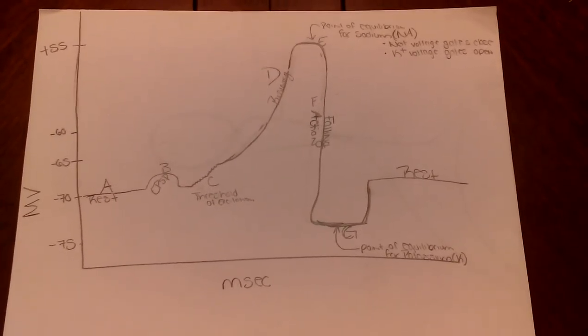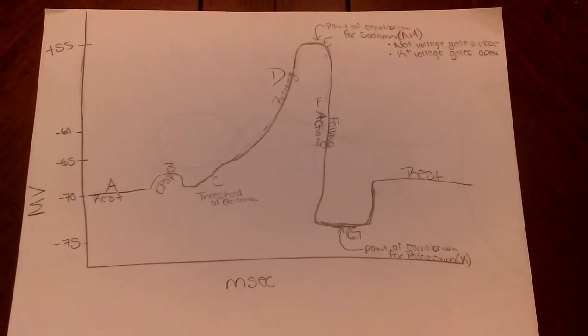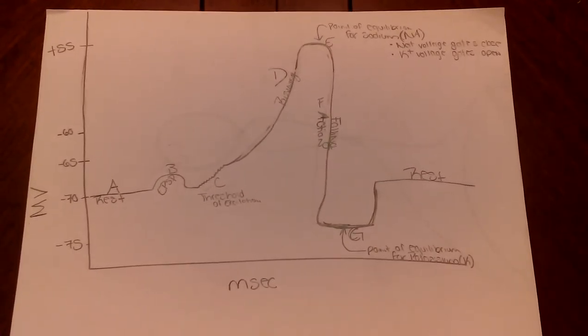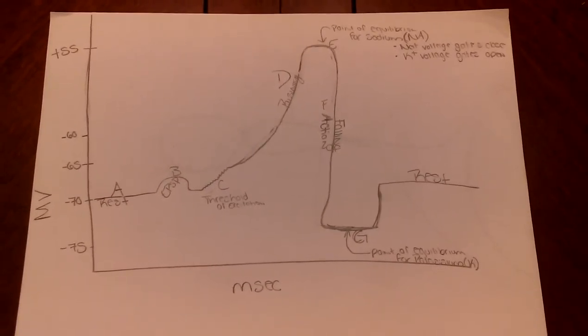While the falling phase is happening, there is an overshoot. The overshoot takes place because the potassium ions are trying to reach their equilibrium at negative 75 millivolts.